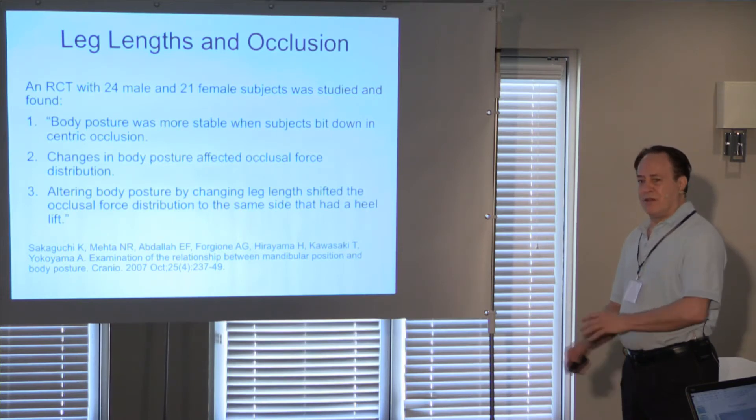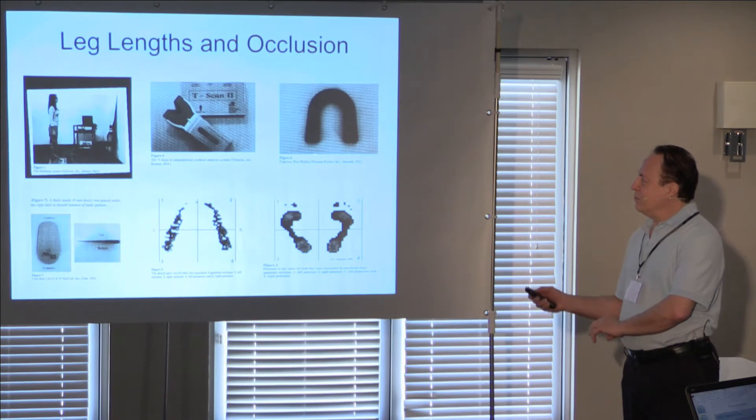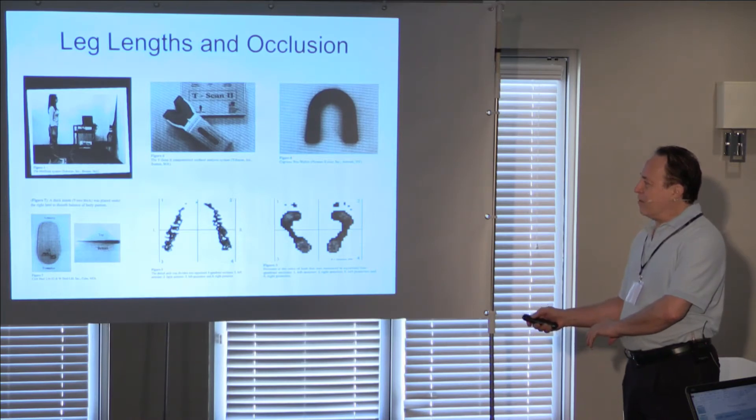They changed postural positioning by putting little wedges or heel lifts under and they found that this would change the occlusal force. And they would measure it by the bite. This was where they were doing the stablometric assessment. And this is where they were looking at how the forces were distributed on bite or posturally with regards to the feet.